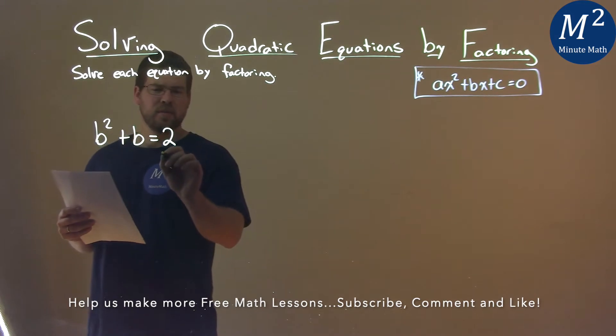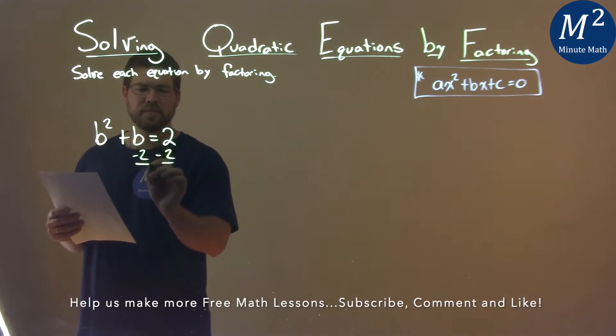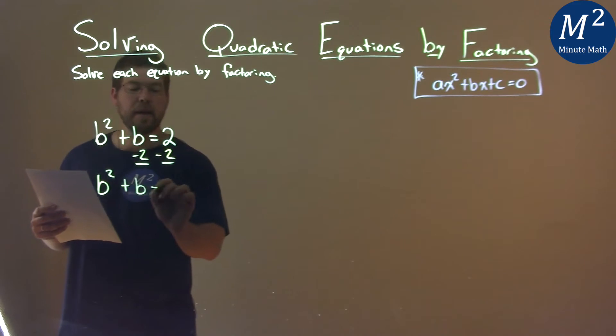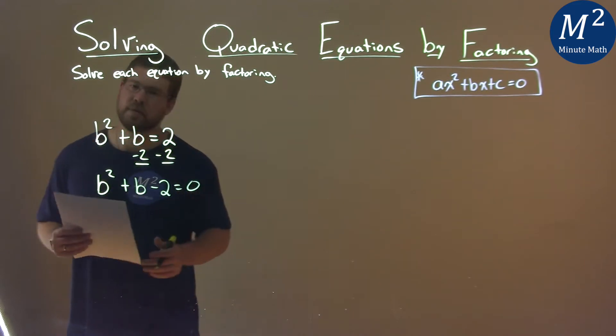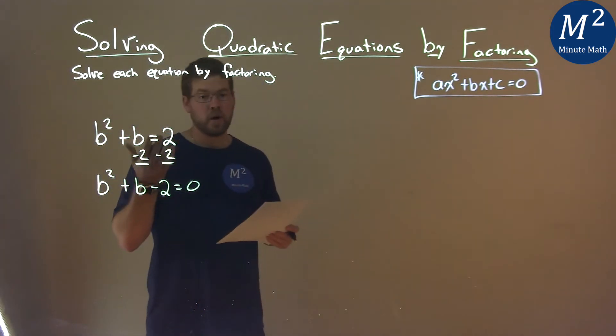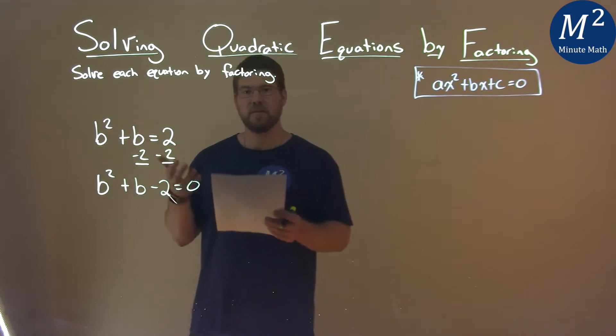First thing I'm going to do is subtract 2 from both sides. That gives me b squared plus b minus 2 equals 0. Setting the quadratic equal to 0 makes it easier to factor and solve.